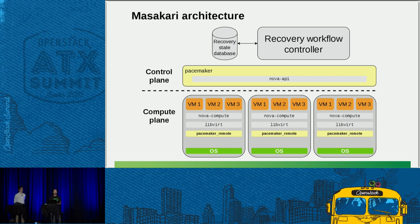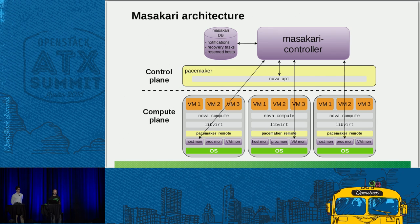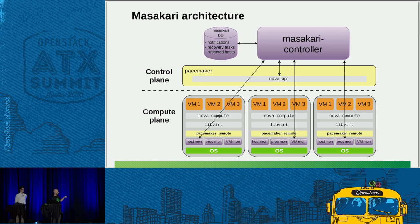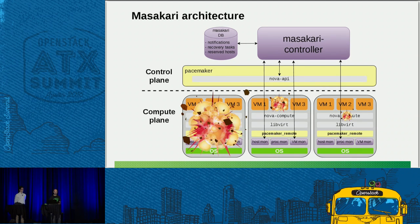The next solution is Masakari, which has a really similar architectural concept. The recovery workflow engine is the Masakari controller, which runs outside Pacemaker, has its own database, and also has extra monitoring processes on each compute node — one to monitor the hosts, one for the processes on the compute node such as nova-compute, libvirt, and Ceilometer agent, and one for monitoring individual VM failures. This is a nice extra feature. Masakari can handle failure of the compute node in its entirety, failure of nova-compute or libvirt, and also individual VM failures.